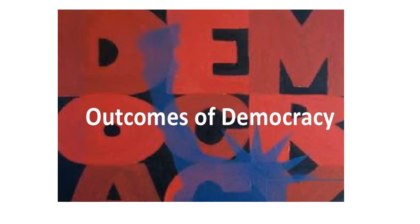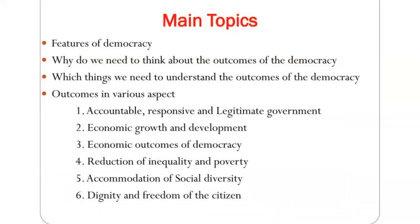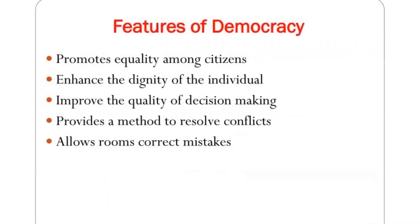So what is the outcome of democracy? In this chapter, we will discuss the main topics: features of democracy, why we need to think about the outcome of democracy, outcome in various aspects — accountable, responsible, and legitimate government; economic growth and development; reduction of inequality and poverty; accommodation of social diversity; and dignity and freedom of the citizen. These are the major parts of this chapter.